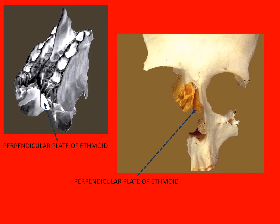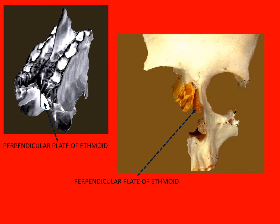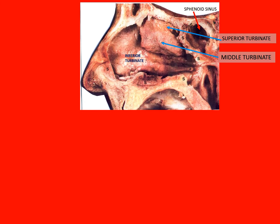The ethmoid bone is separated from the orbit by a thin plate of bone called the lamina papyracea, which at times can be dehiscent. This is a view of the lateral wall of the nose, as seen from the medial side by making a window through the septum.